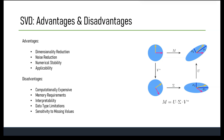Further advantages include numerical stability — SVD provides a numerically stable solution to problems like matrix inversion, even for ill-conditioned or singular matrices. It is a versatile tool used in natural language processing, recommendation systems, image processing, and genetics. Disadvantages include being computationally expensive for large datasets, and high memory requirements for storing decomposed matrices, which can be challenging in memory-limited environments.